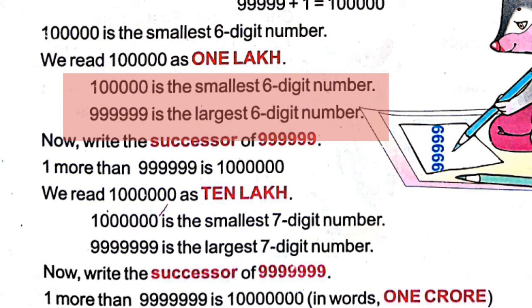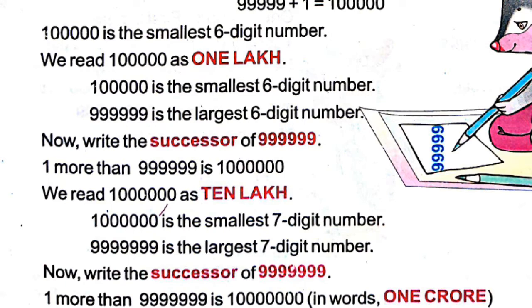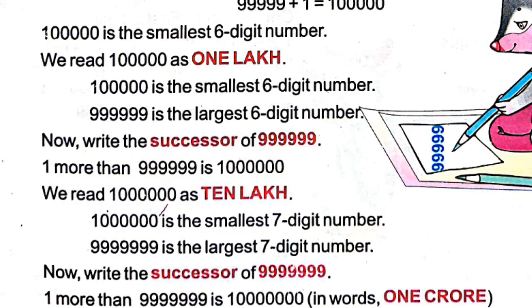One lakh is the smallest six-digit number. The largest six-digit number has six nines. The successor of the six-digit largest number is ten lakh — 1 with six zeros — which is the smallest seven-digit number and the successor of the six-digit largest number.